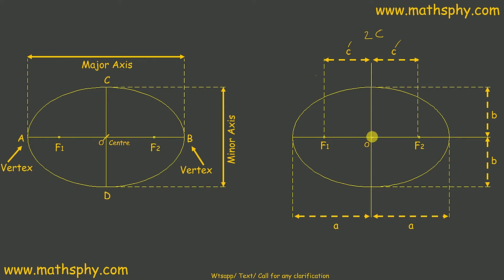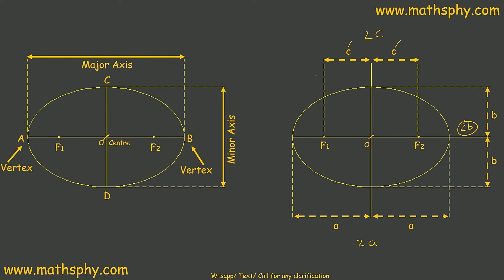Likewise, the minor axis is split into two equal halves from the center, each half called B, so the minor axis is 2B. The major axis is 2A, with each half from center being A. To summarize: major axis is 2A, minor axis is 2B, and the distance from focus to focus is 2C — each split into equal halves: A and A for major, B and B for minor, C and C for focus distances.